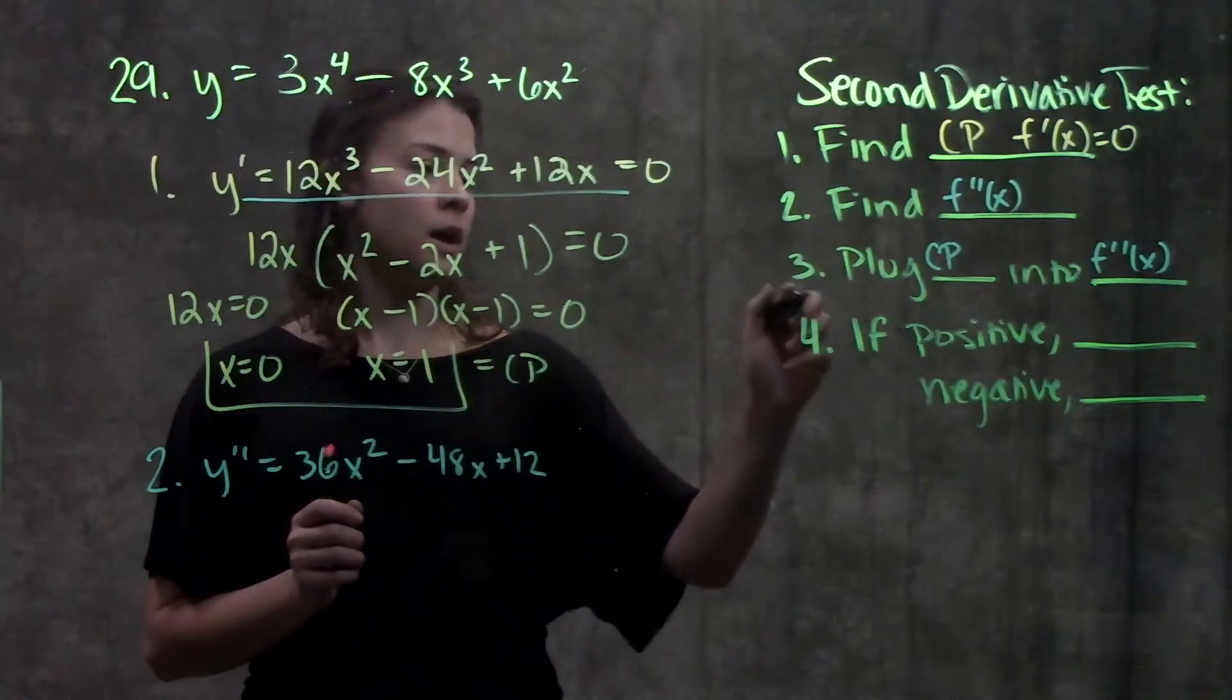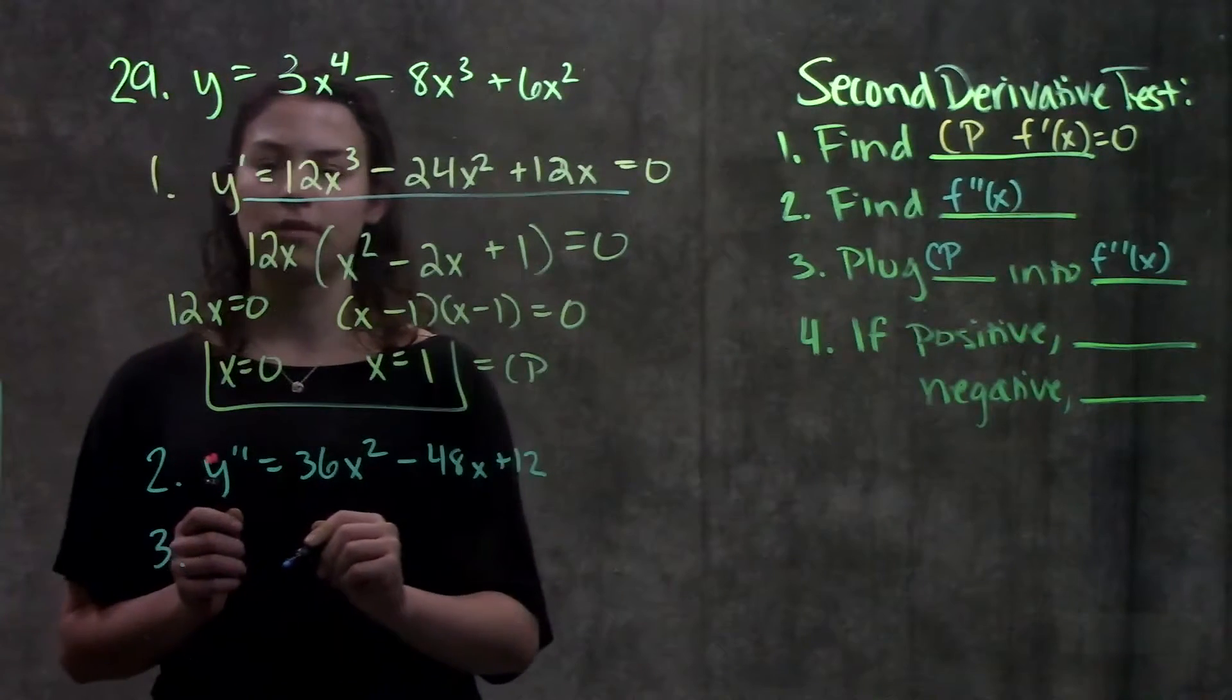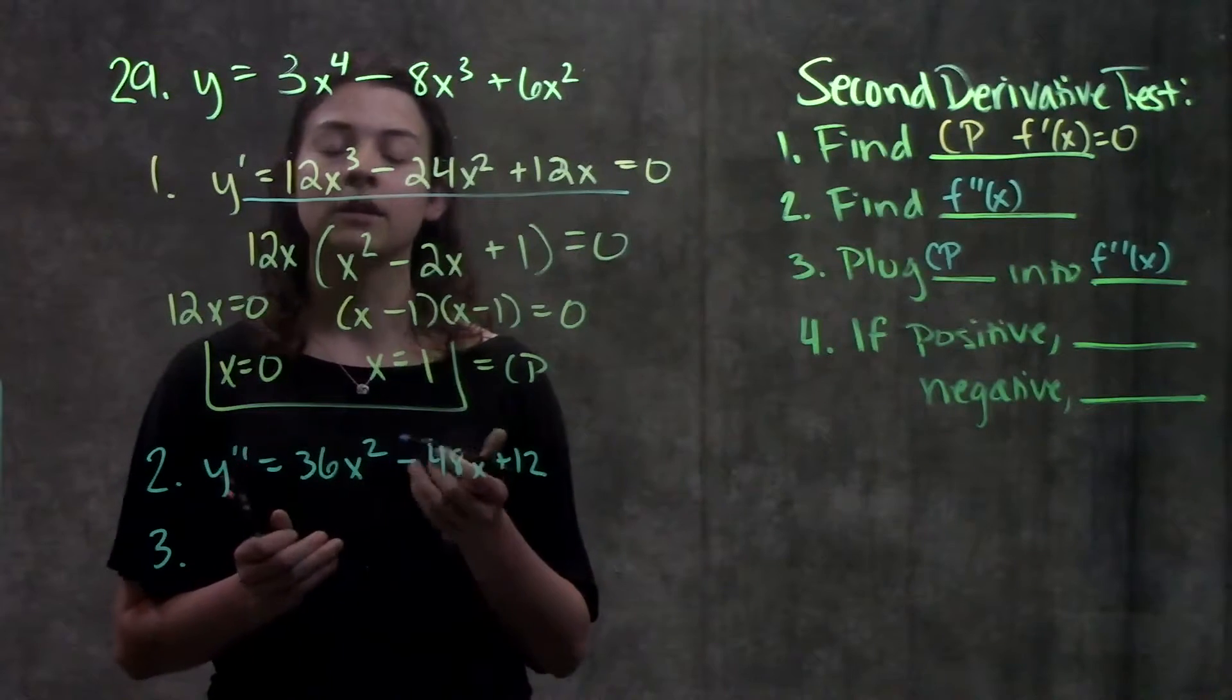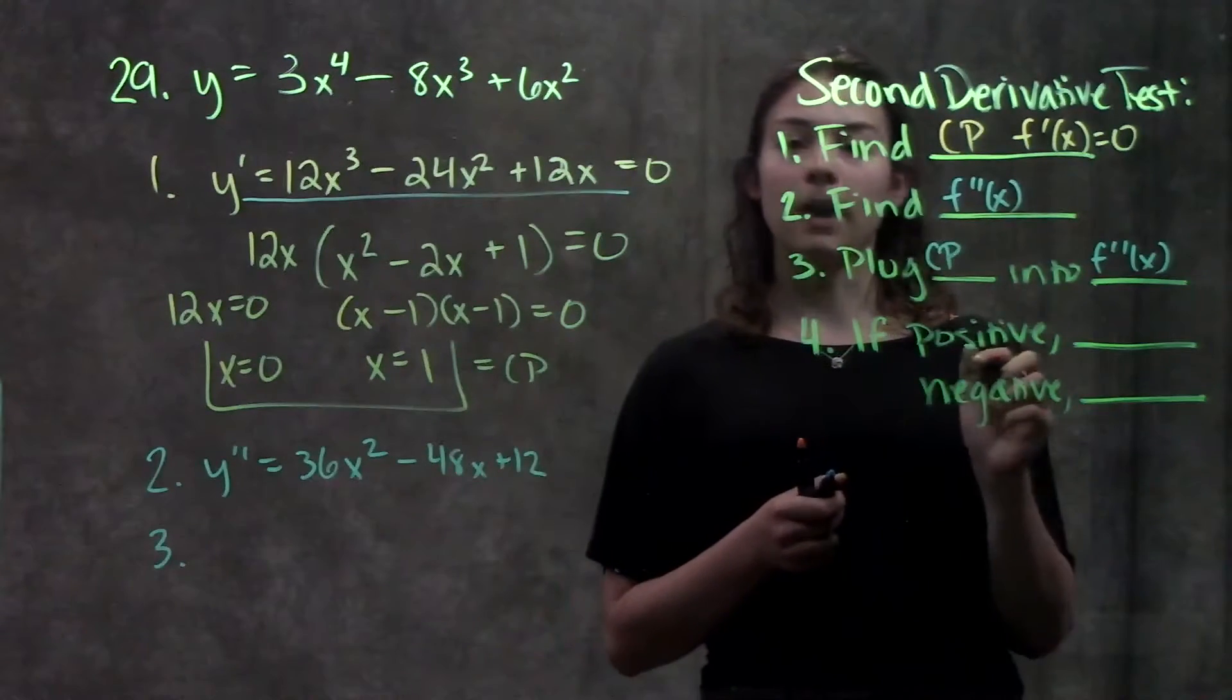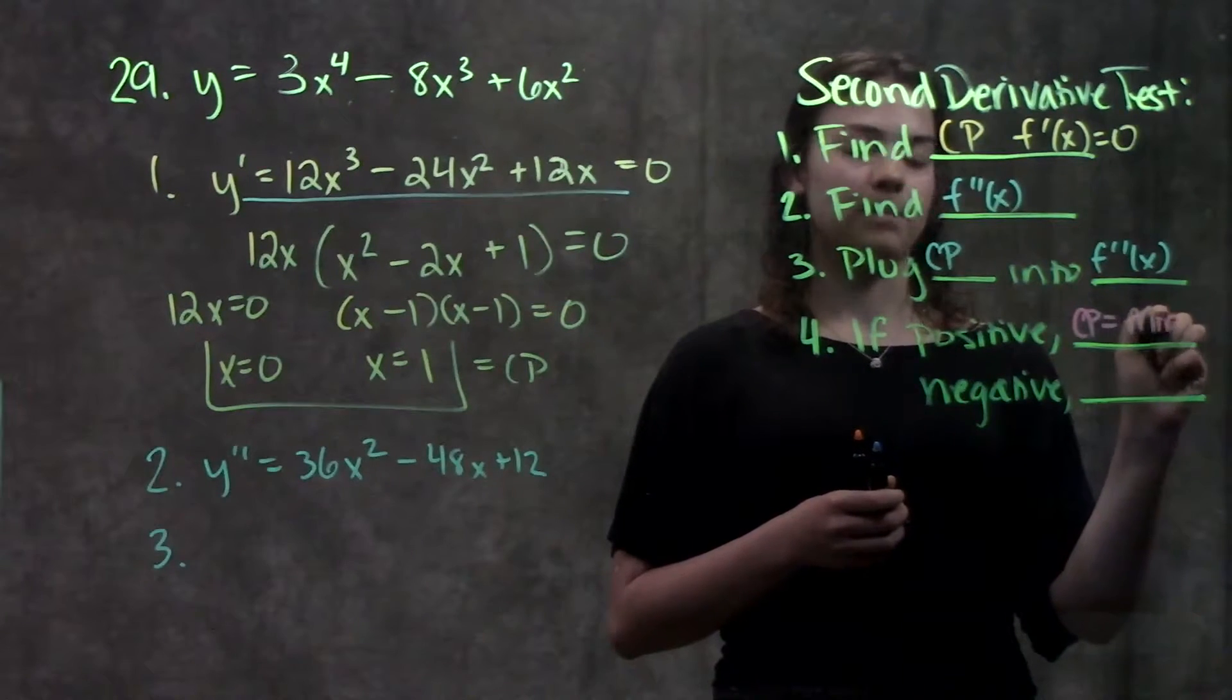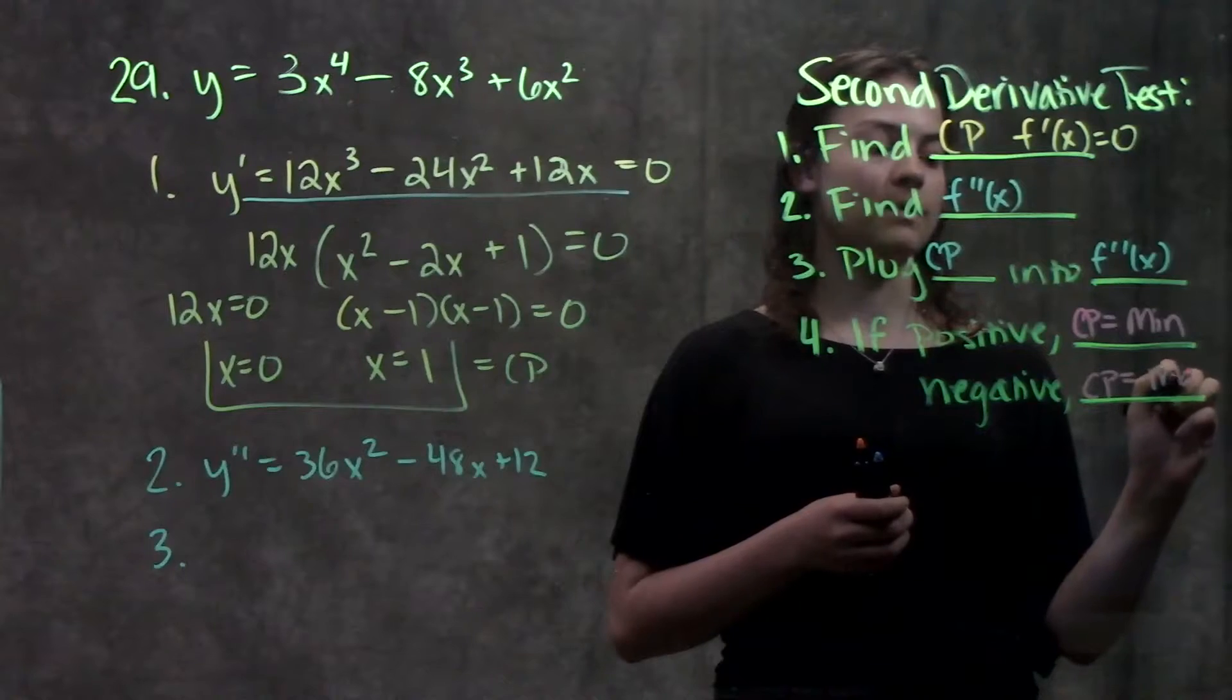And the third step said plug critical points into our second derivative. When we plug our critical points into our second derivative to determine whether it's a min or max, we're only worried about the sign of our second derivative. If the sign of our second derivative is positive, then that means that that critical point is a minimum. And if our sign is negative, that means that critical point is a maximum.